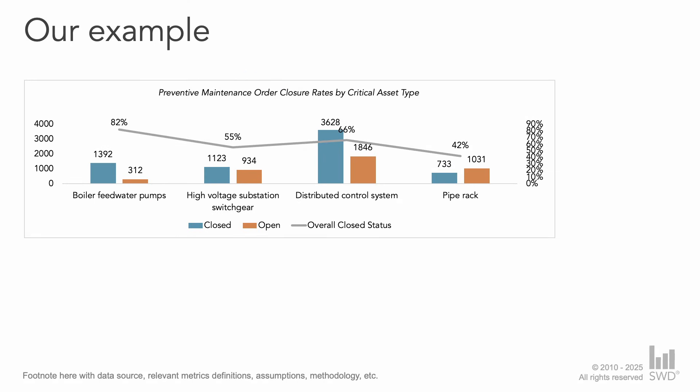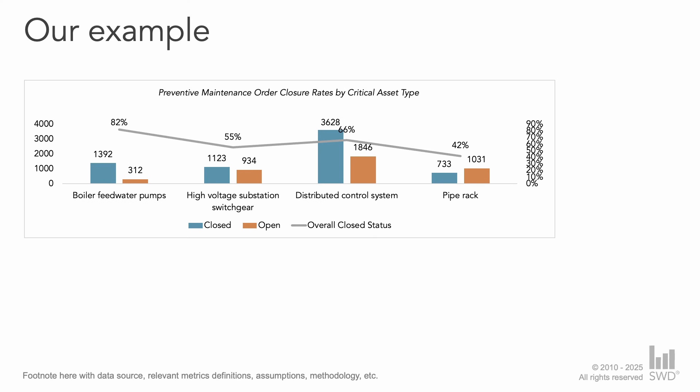The secondary vertical axis tracks the percentage of orders closed per asset type. The goal of this view is for our audience to better understand which of the individual asset areas are more successful in closing their orders and which might require a little bit of attention.